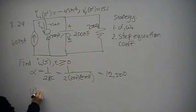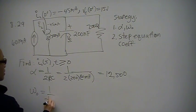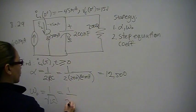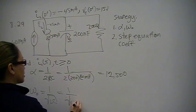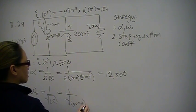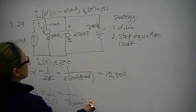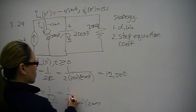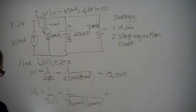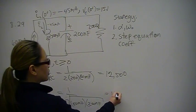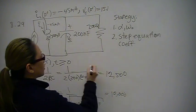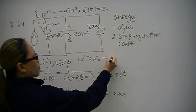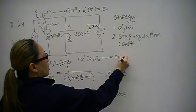Omega-naught is 1 over the square root of LC, and that is 1 over the square root of 50 millihenrys times 200 nanofarads. Put that into your calculator — you should come up with 10,000. So we have a case where alpha is greater than omega-naught. Therefore, we have an overdamped response.